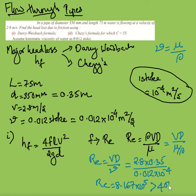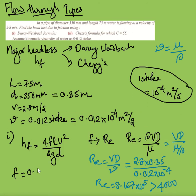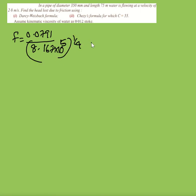For turbulent flow, we use the equation f = 0.0791 / Re^(1/4). Substituting Re = 8.167 × 10⁵: f = 0.0791 / (8.167 × 10⁵)^(1/4), which gives f = 0.00263.